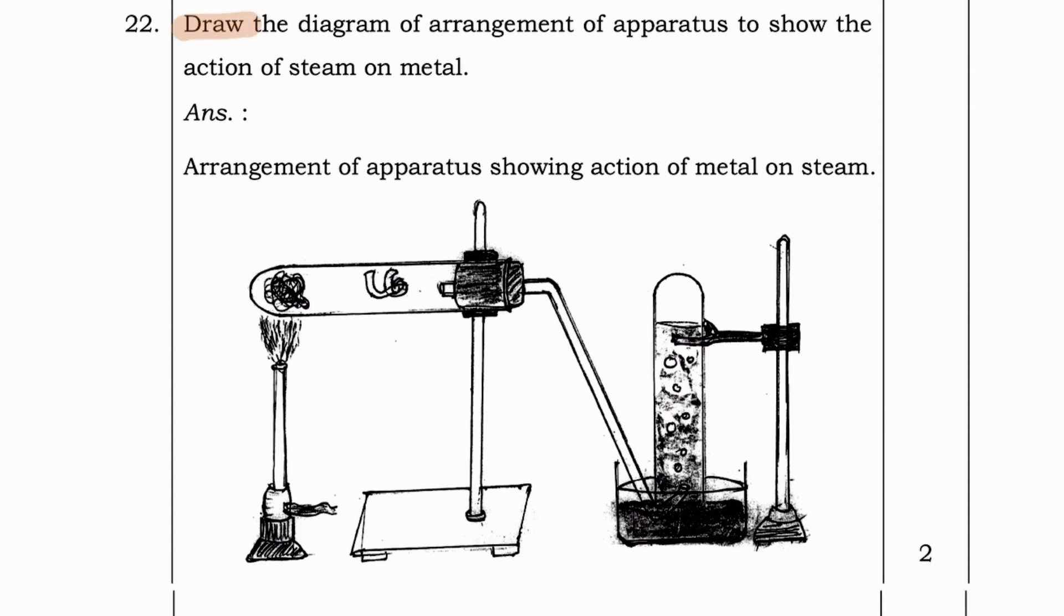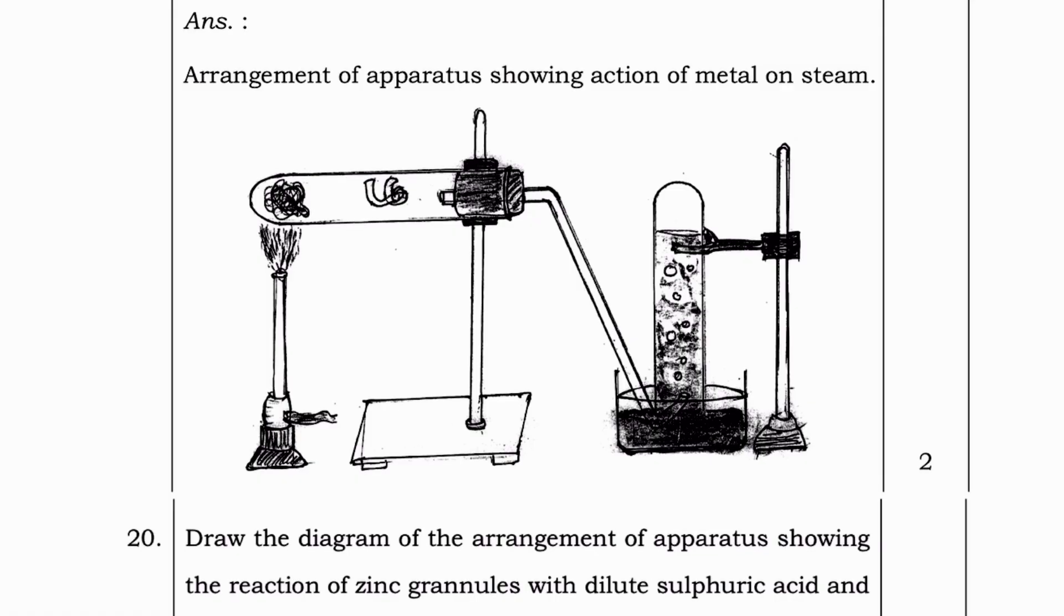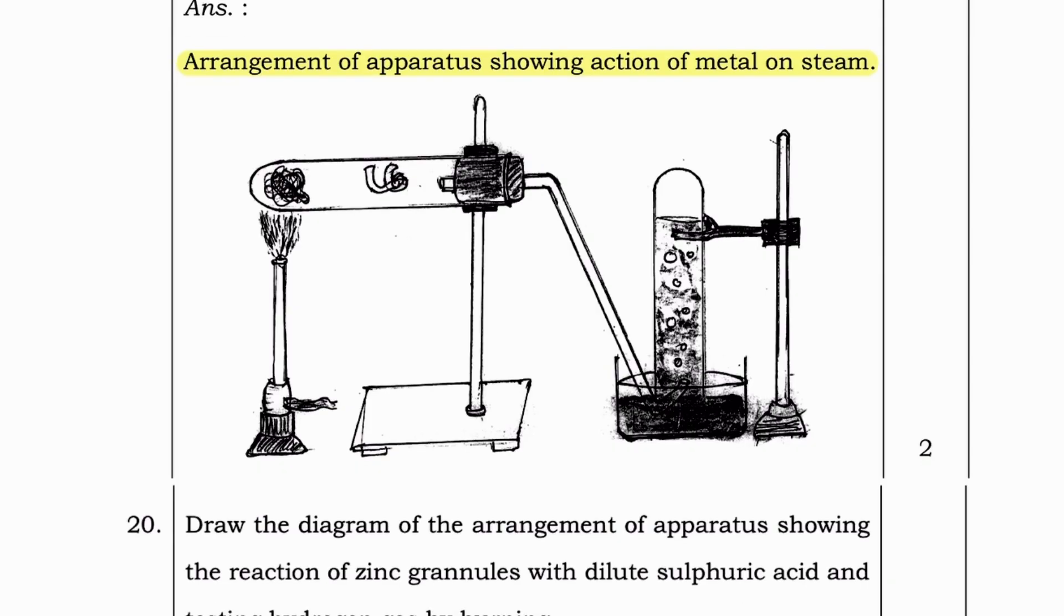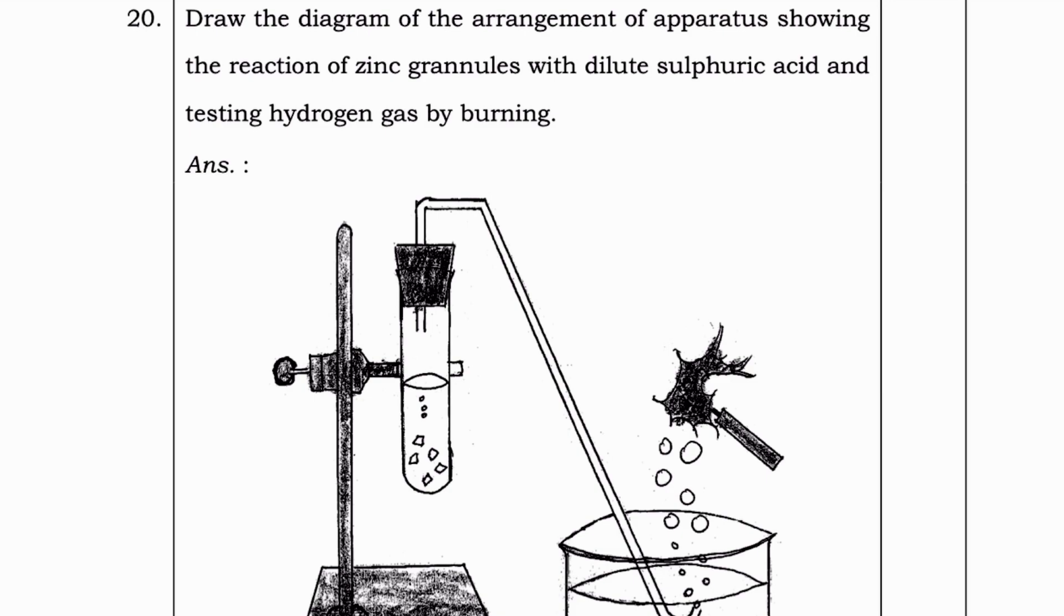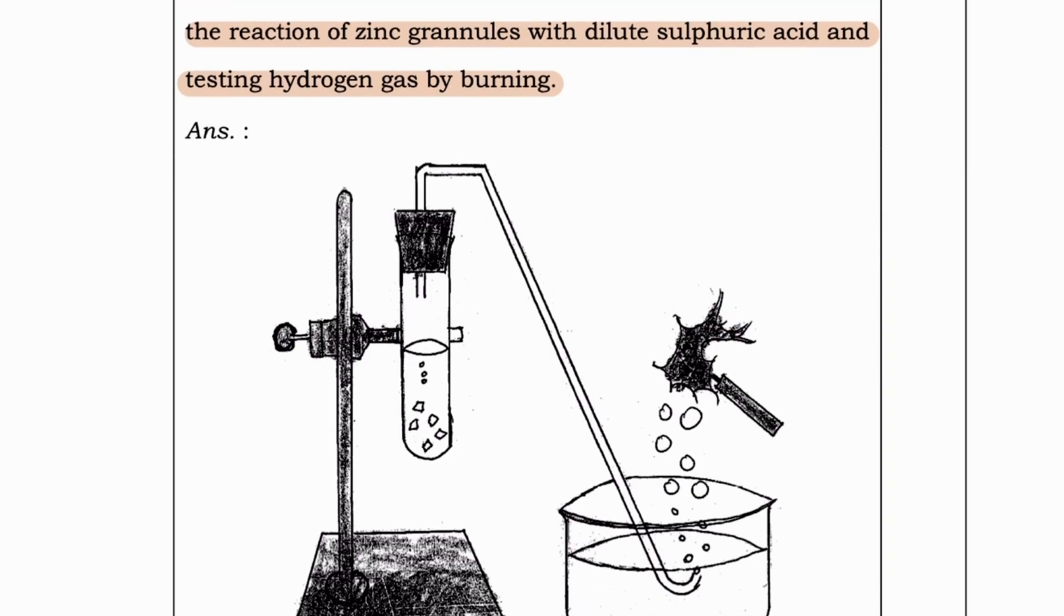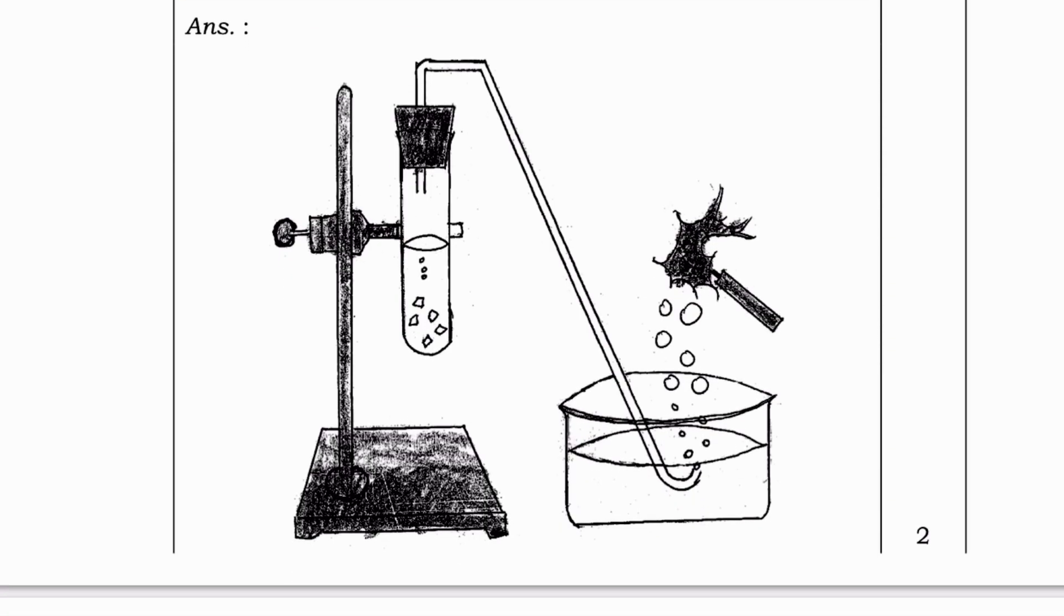Next, draw the diagram of arrangement of apparatus to show the action of steam on metal. This is the answer, arrangement of apparatus showing the action of steam on metal. I think you all are familiar with this diagram. Let's go to next question. Draw the diagram of arrangement of apparatus showing the reaction of zinc granules with dilute sulfuric acid and testing hydrogen gas by burning.